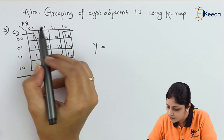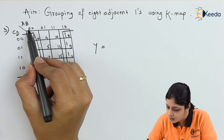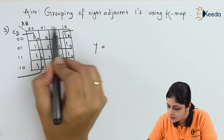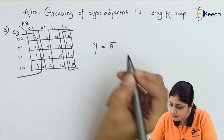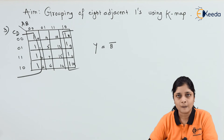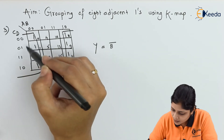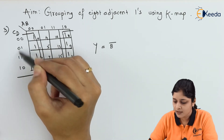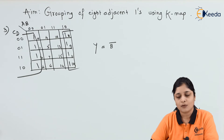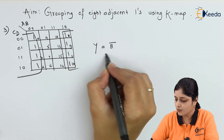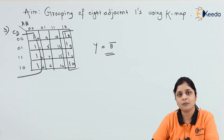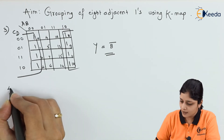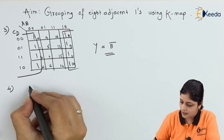A is changing from 0 to 1, so don't consider A. B is 0 and 0, so B is the same — write B̄ here. On the vertical side, C also changes and D also changes, so don't consider them. The final answer is Y = B̄ for this type of grouping.